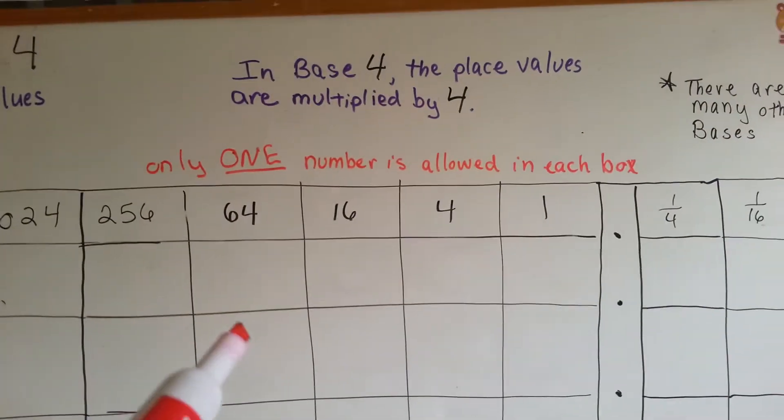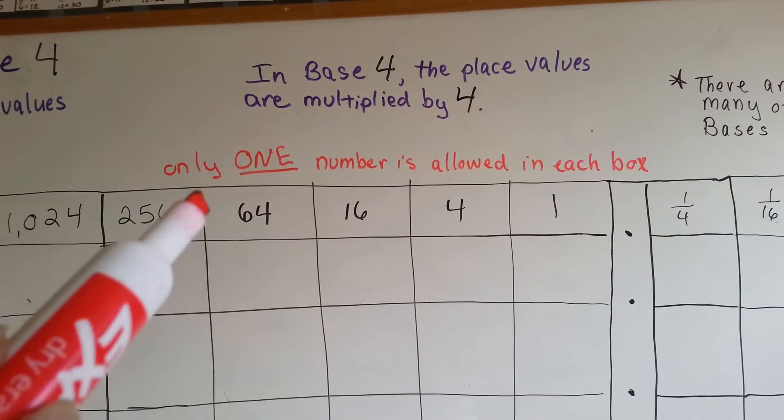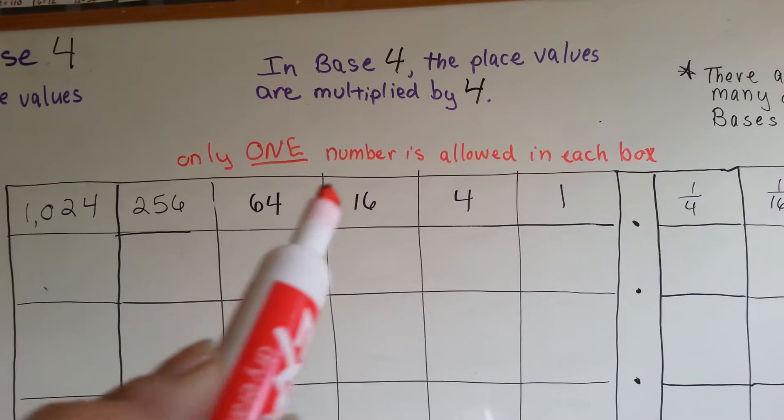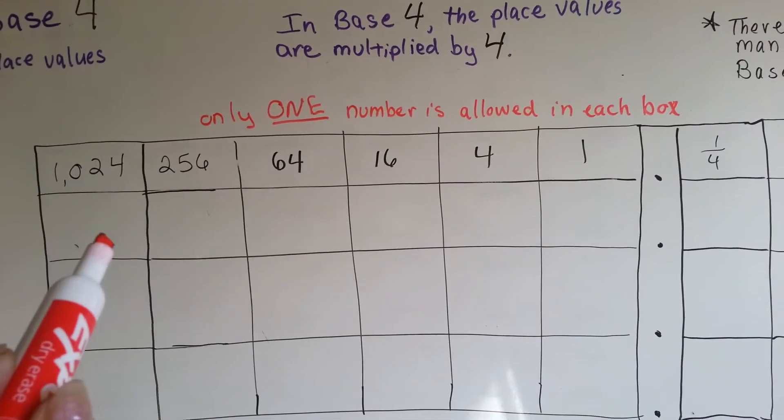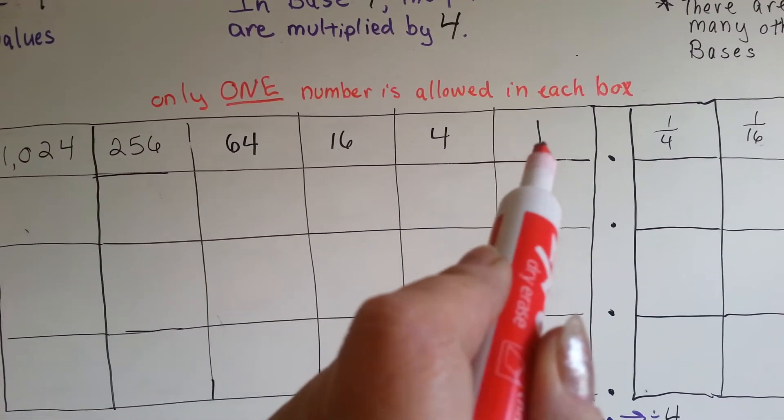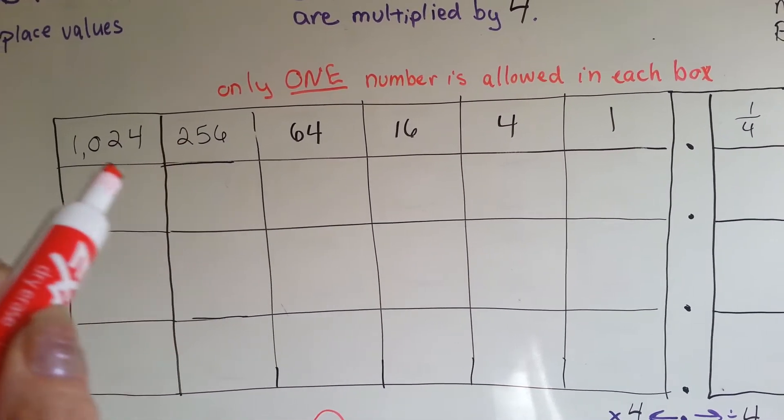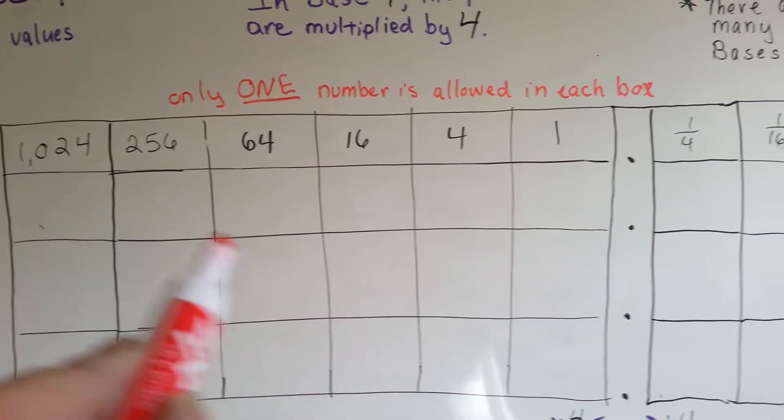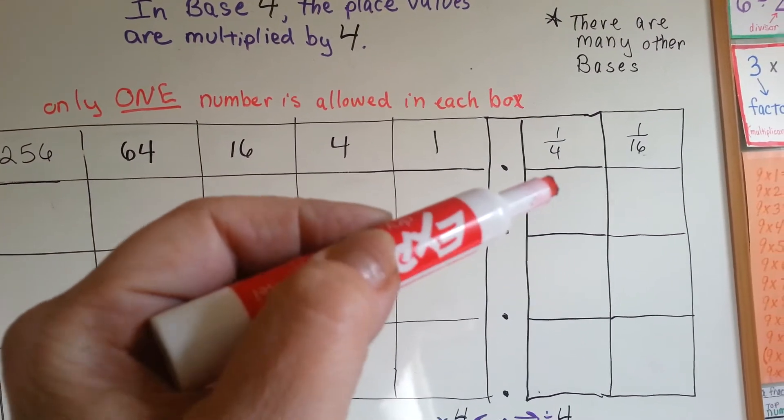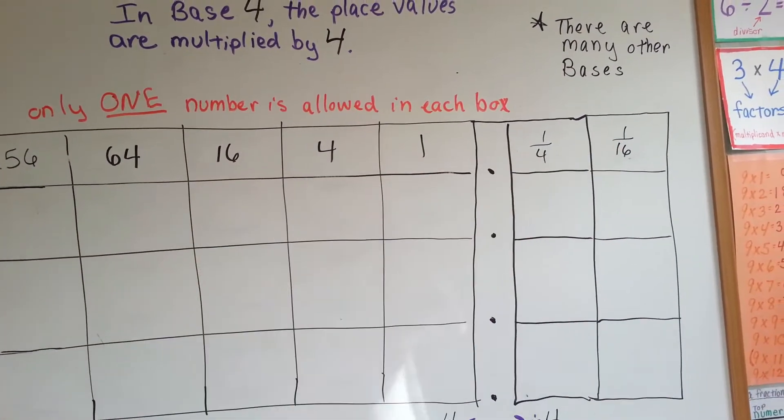Each place value is multiplied by four, and you're only allowed to put one number into each box. So we go from ones to fours to sixteens to sixty-fours to two fifty-sixes to one thousand twenty-fours. And then, to the right of the decimal place, we have one-fourths and one-sixteenths.